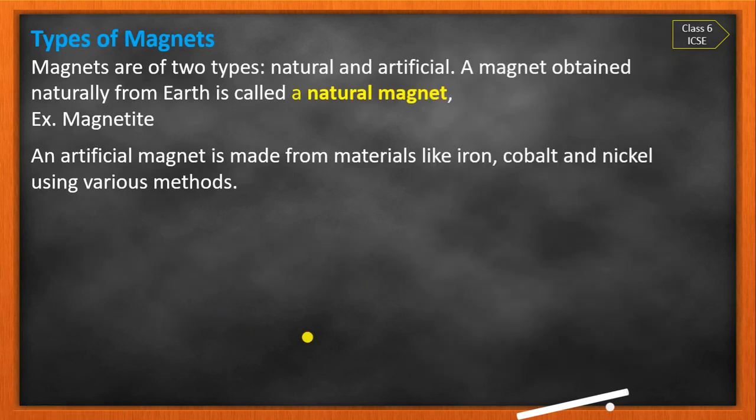Magnetite is nothing but the magnet. Types of magnets: magnets are of two types. The first is natural and the second is artificial. A magnet obtained naturally from the earth is called a natural magnet — example: magnetite, the black stone. The artificial magnet is made from materials like iron, cobalt, and nickel using various methods.